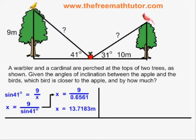Sine of 41 degrees is equal to opposite 9 over hypotenuse x. I plug the values into the formula, and I simplify, and I get 13.7183 meters. This is rounded off to four decimal places, but I am keeping the full value in the memory of my calculator.